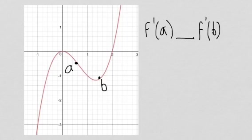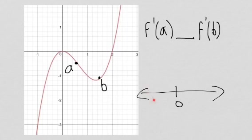Another type of question we run into is: which is bigger, f prime of a or f prime of b, if we're looking at a function f of x? The thing we say is, well, this function looks steeper at a than it does at b. If we were to draw a tangent line, which of these would be steeper? They would be steeper at a. But the thing is, f prime of a is negative and f prime of b is positive. So if we look at a number line, over here we have negative numbers, over here we have positive numbers. Any negative number is going to be over here, and b is going to be somewhere right here.